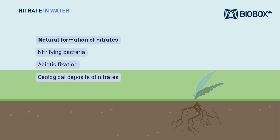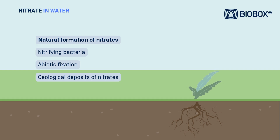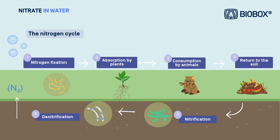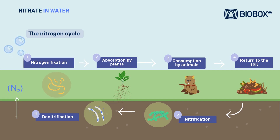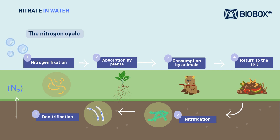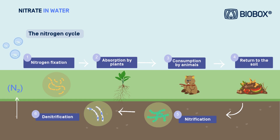Nitrate forms naturally through various processes such as the action of nitrifying bacteria, abiotic fixation, and in certain specific geological formations. The nitrogen cycle maintains a natural balance by transforming and circulating nitrogen through the atmosphere, soil, living organisms, and water, ensuring that nitrate does not accumulate excessively.